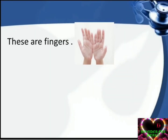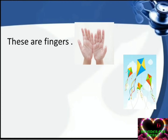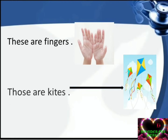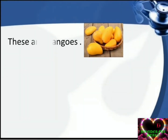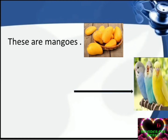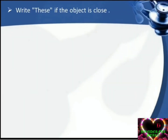These are fingers. Those are kites. These are mangoes. Those are birds. The arrow shows the birds are far from us. Write these if the object is close. Write those if the object is far.